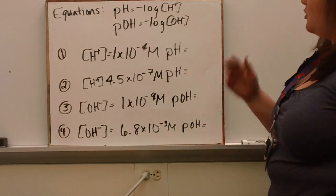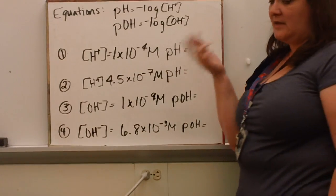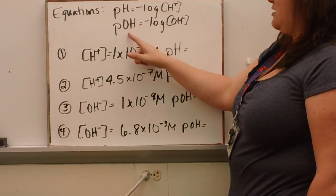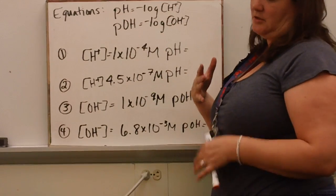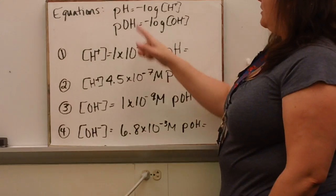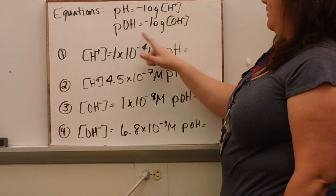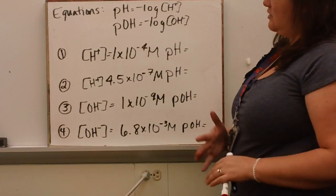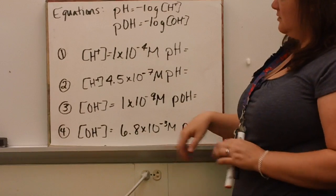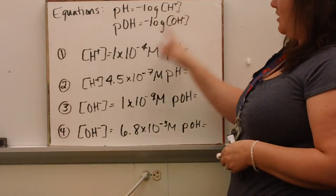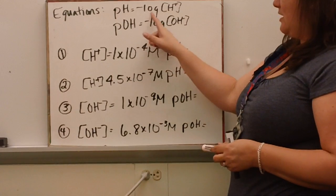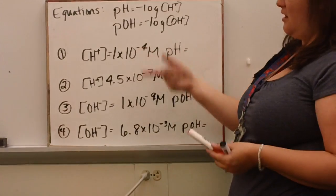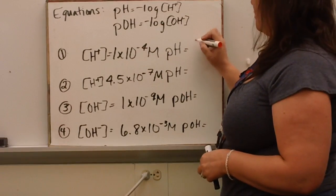We have some equations in your reference packets, so you don't have to memorize them. We're going to look at how to find pH and pOH. pH equals the negative log of the hydrogen ion concentration, and pOH equals the negative log of the hydroxide ion concentration. Using logarithms, we take the negative log of our hydrogen concentration. The log gives us the power of 10, which is negative 4, and the negative changes the sign, so the pH here would be 4.